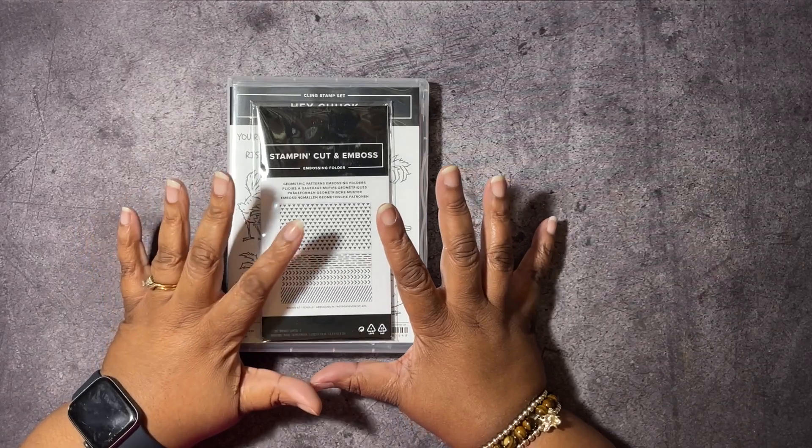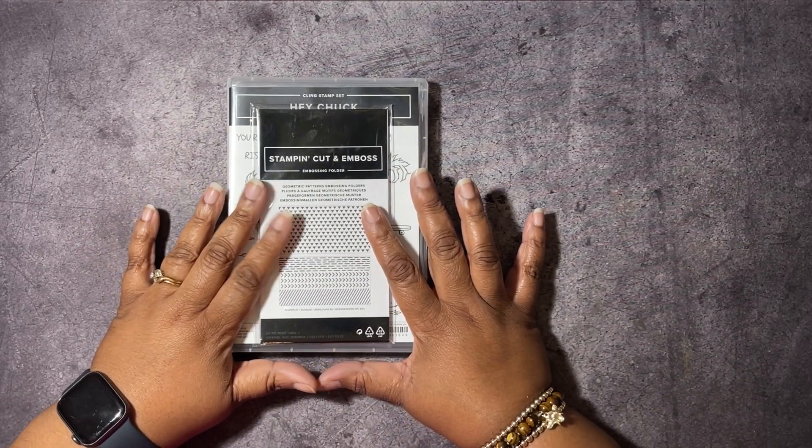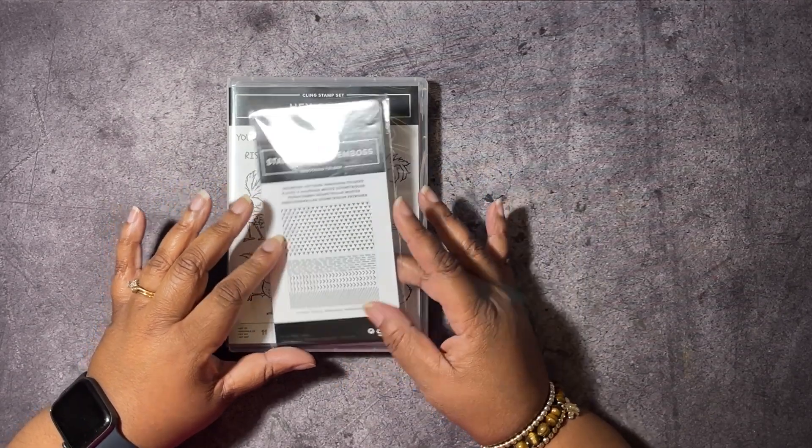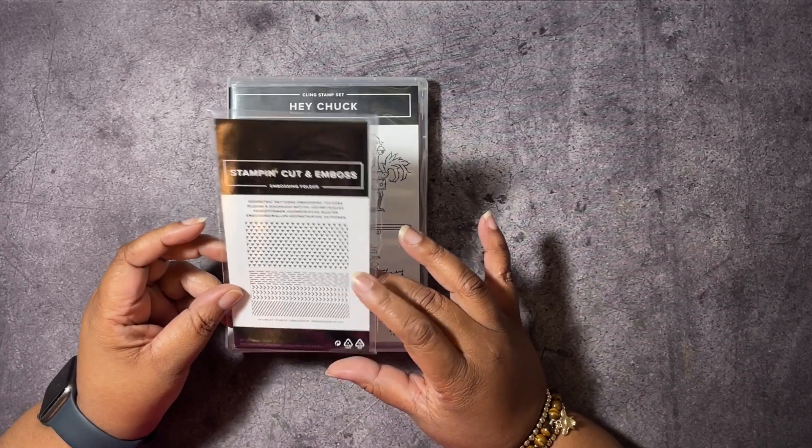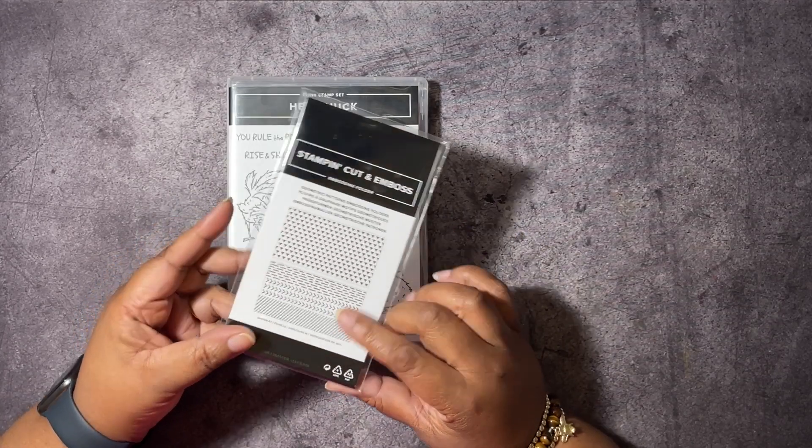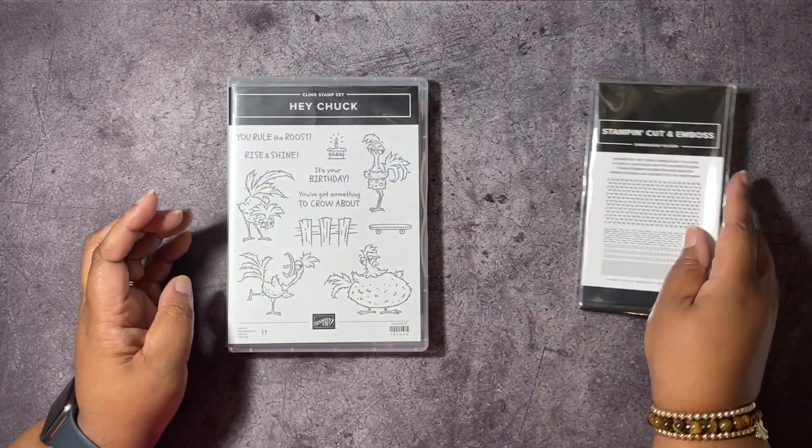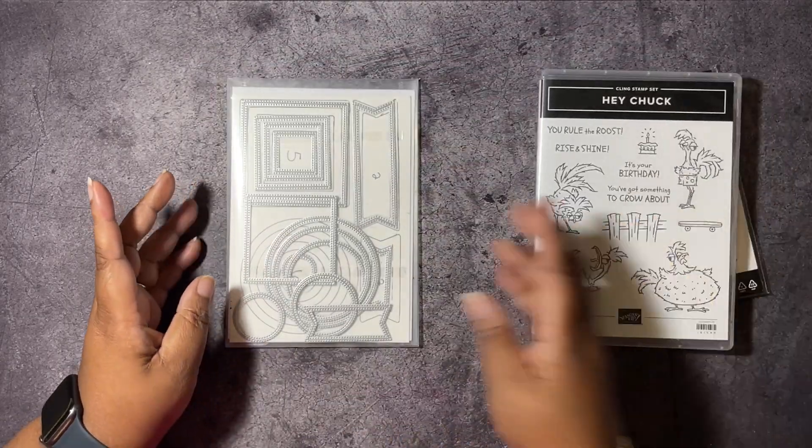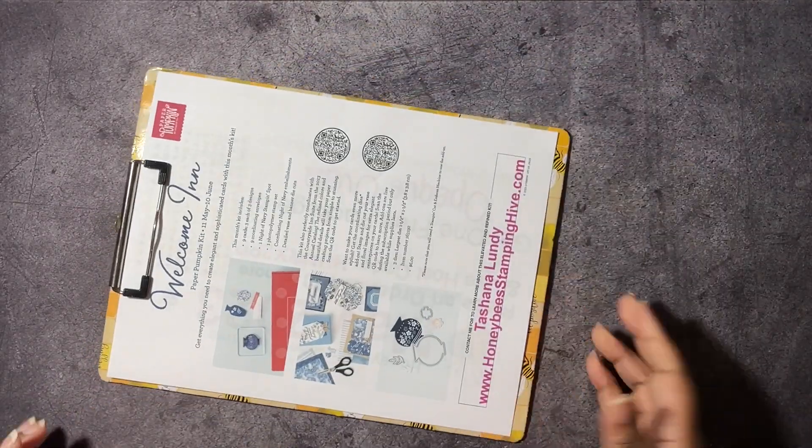And today, we're going to be doing our fourth and final card in the Hey Chuck series. We're going to be using the Geometric Patterns Embossing Folder. This pack of folders comes with two different embossing folders, and we're going to be using this one on the bottom that has three different textures on it. Of course, we're going to be using the Hey Chuck stamp set, along with the stylus-shaped dies. But before we get started on our project, we have to go over the buzzworthy business of the day.